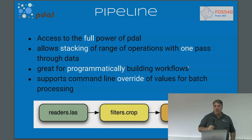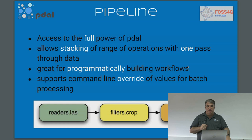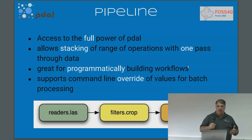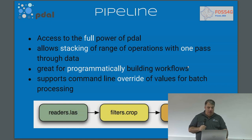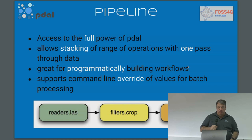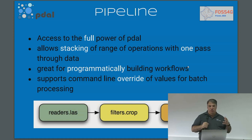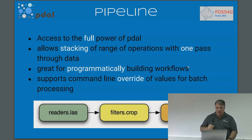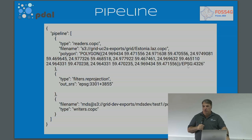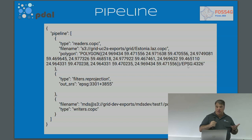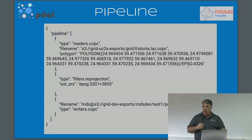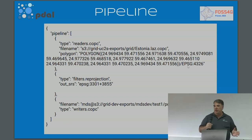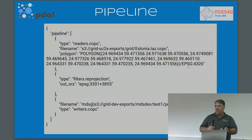So what are pipelines? Pipelines are essentially the full power of Poodle. They're a way to organize readers, filters, and writers in an organized collection that allows you to process, read, and write data once and do a bunch of operations. They can be done with command line overrides, which is great for batch processing. Since you're dealing with so much data, you only want to read it once — that's the whole idea behind pipelines. Here's an example pipeline: reading with a specified reader, clipping it to a specific polygon, specifying a reprojection filter, and then writing it out to a new dataset. I could have done this with Poodle Translate — it would essentially create a pipeline in memory, process it, and return the data.